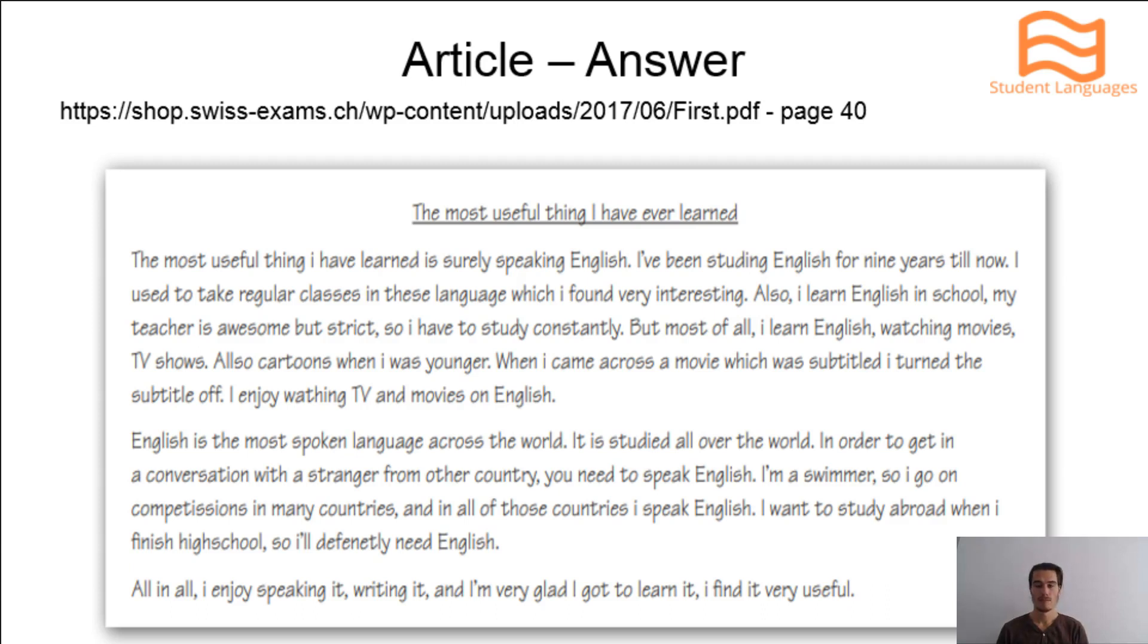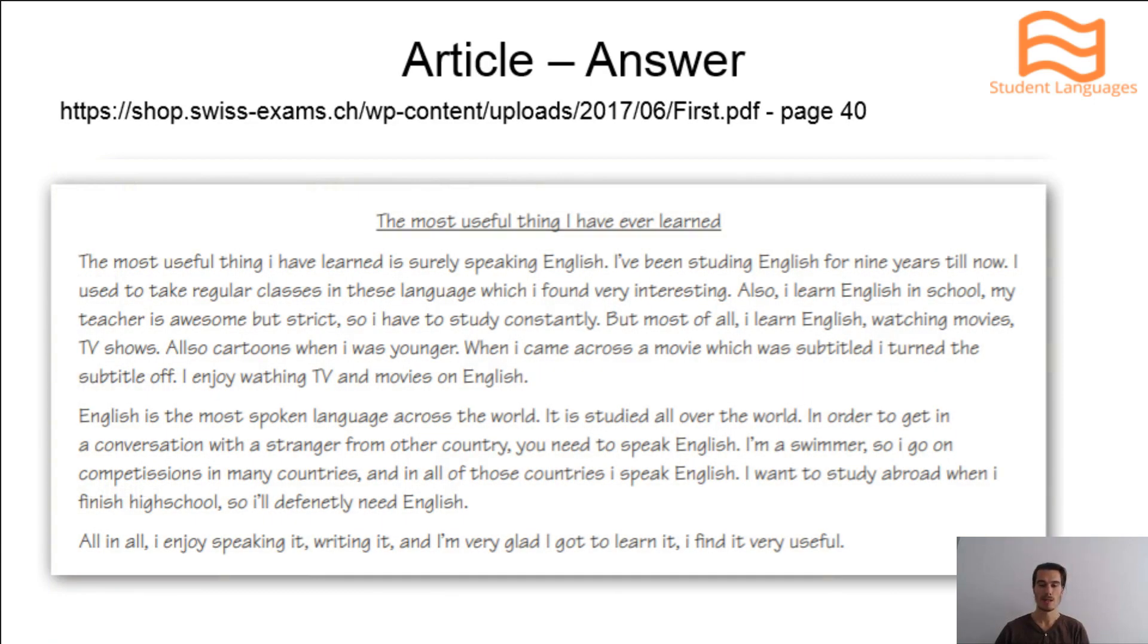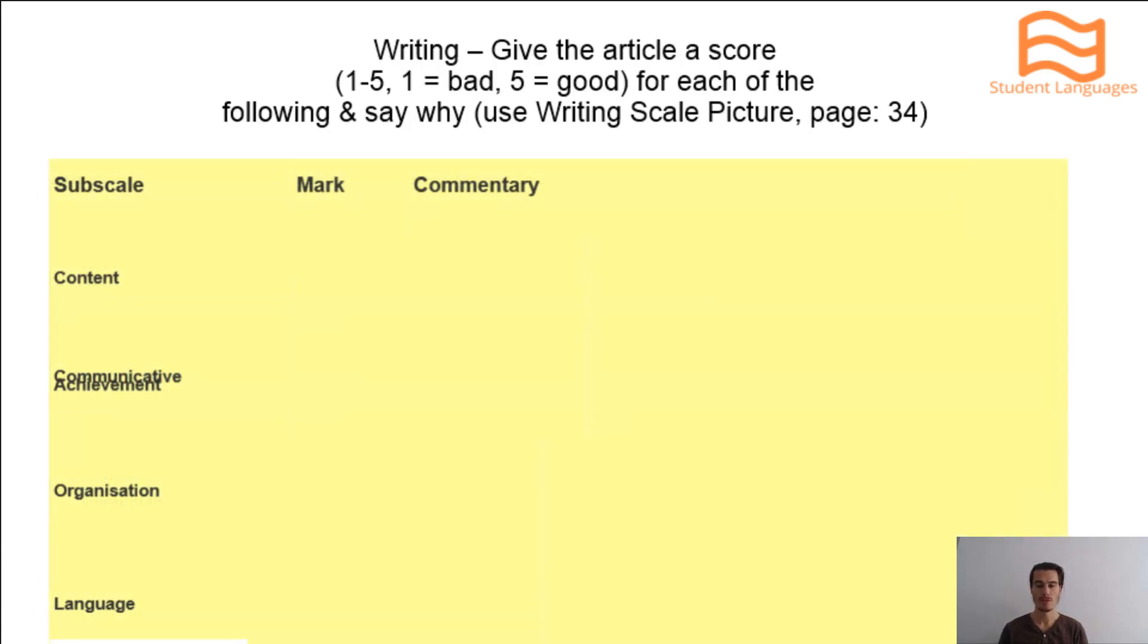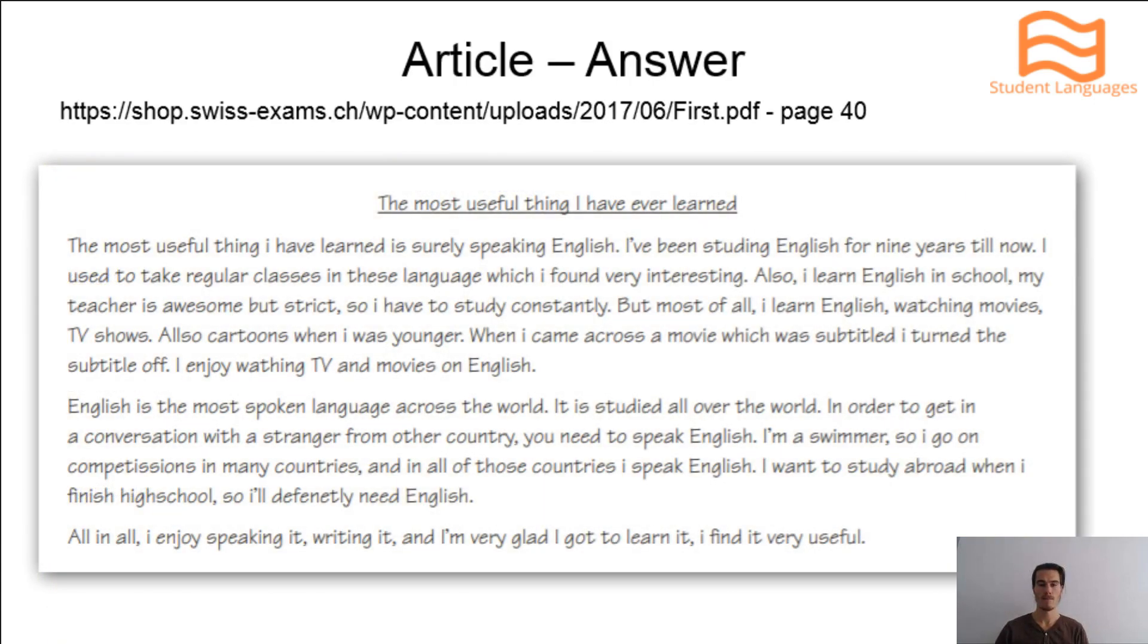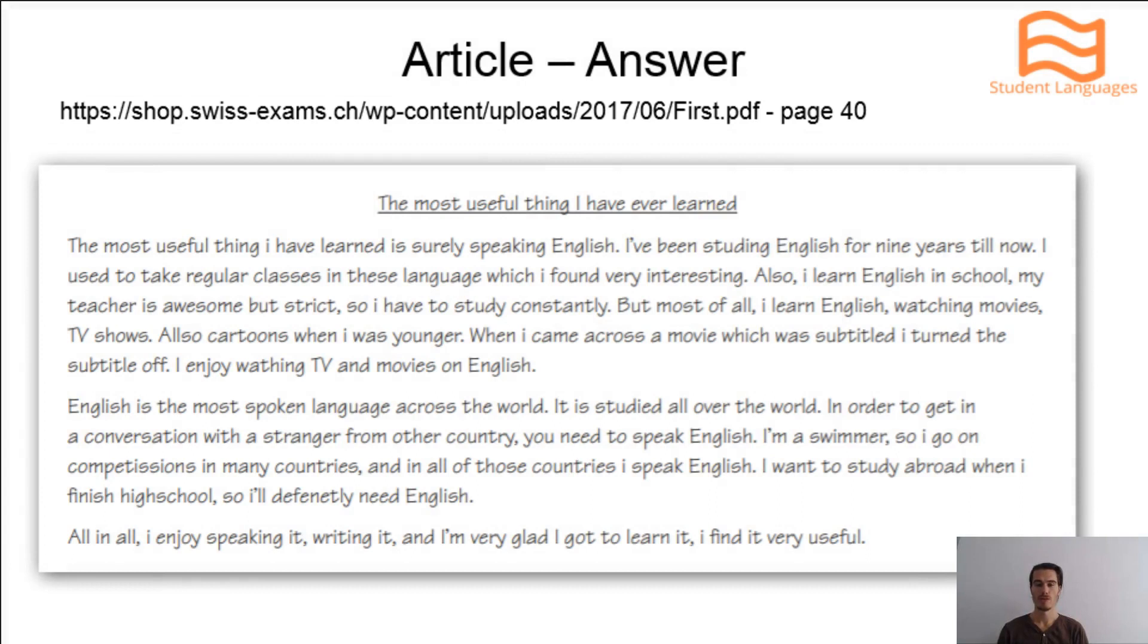Here is an example answer. What I'd like you to do now is have a look at this writing criteria, which is how the examiners will mark this article. You need to give a mark from one to five, one being bad and five being good, for each of these criteria on the left hand side: content, communicative achievement, organisation and language. Read this article and give it a mark from one to five for each of those four criteria and write your comments. I will leave this table on the screen, but you should type in this web address and go to page 40 so you can read this article.